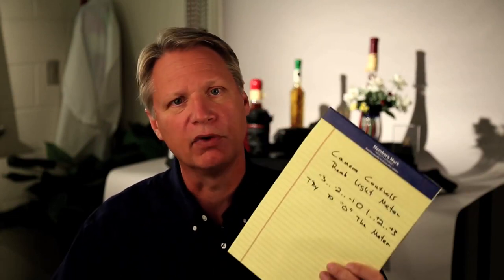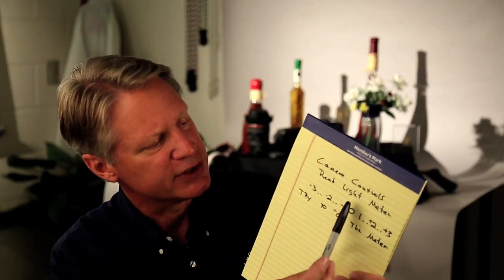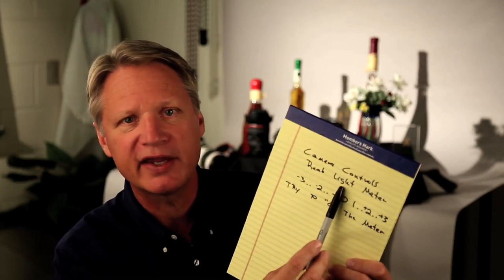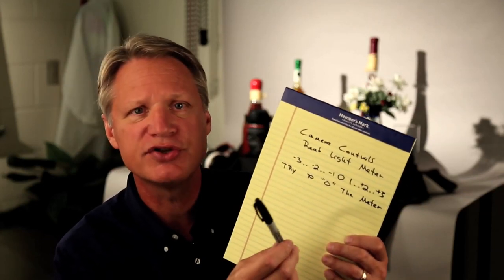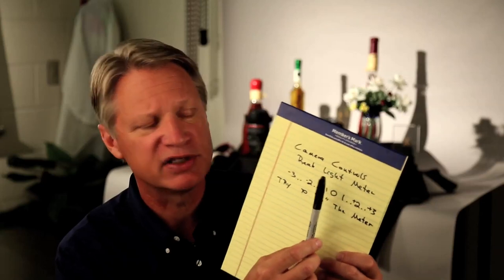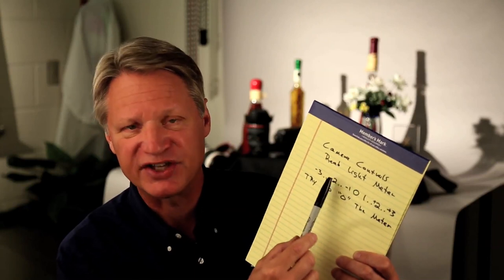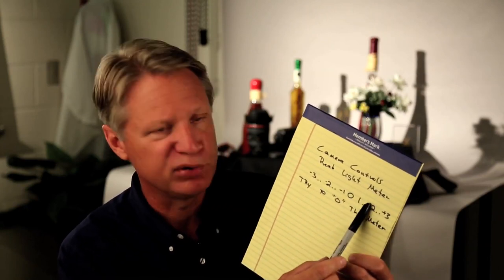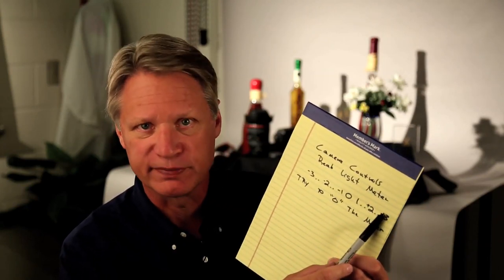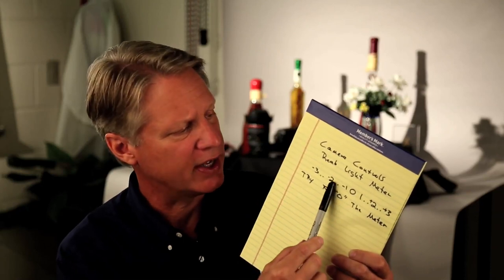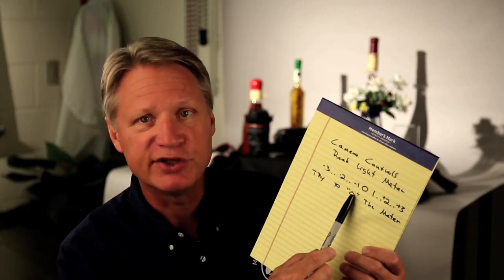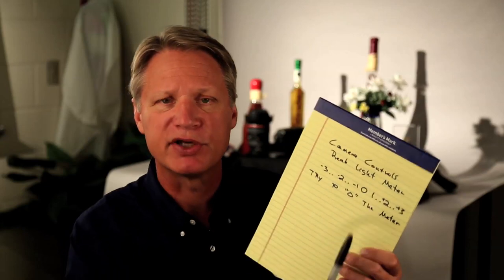That involves actually reading the light meter. What we're going to try to do is look at the light meter and keep the indicator as close to zero as possible. The minus would be underexposed, the plus will be overexposed. We want to zero the light meter and keep it as close to the center point or zero scale as possible.